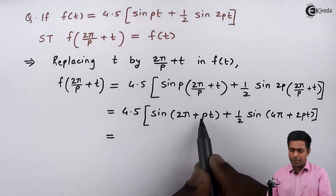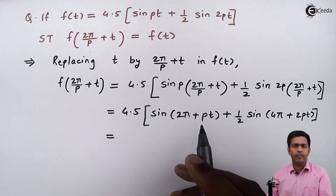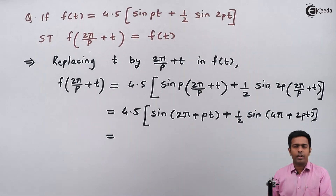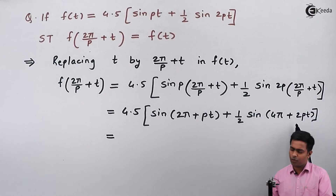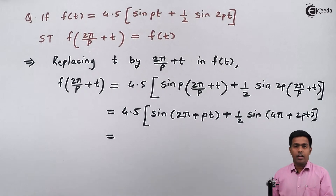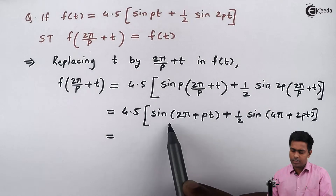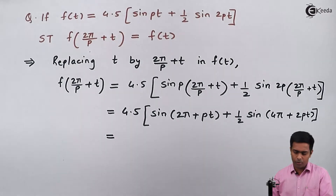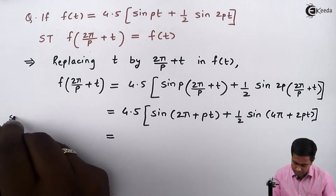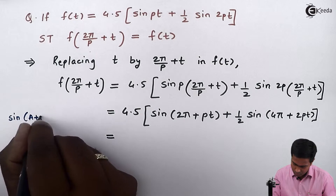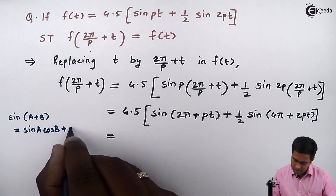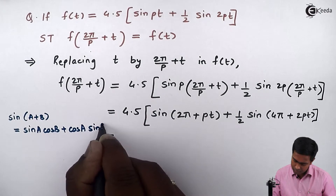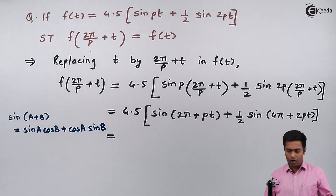Now sin(2π + pt) can be found using trigonometric formulas. Similarly we have a formula for sin(4π + 2pt). We can find sin(2π + pt) using the formula sin(a + b), which is sin(a)cos(b) plus cos(a)sin(b).